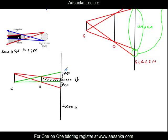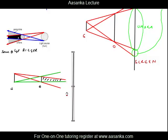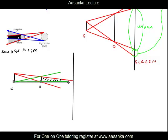Now if you shift your screen towards the right, this Umbra area will get further reduced. If you keep shifting the screen back, a stage will come where there will be no Umbra at all. In fact, this is how the region of Umbra keeps decreasing while the Penumbra keeps increasing.